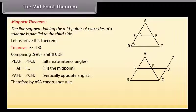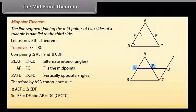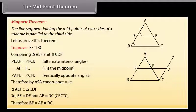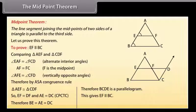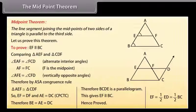By ASA congruence rule, triangle AEF is congruent to triangle CDF. So EF = DF and AE = DC by CPCTC. Therefore BE = AE = DC, so BCDE is a parallelogram. This gives EF parallel to BC. Hence proved. Also, EF = ½ ED = ½ BC.